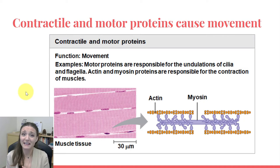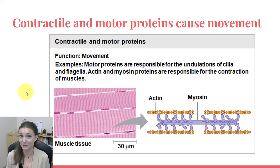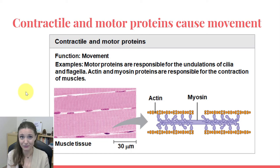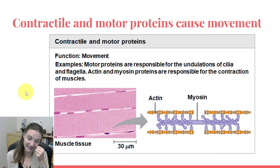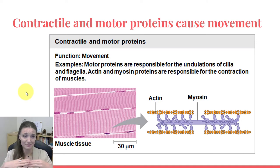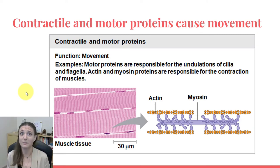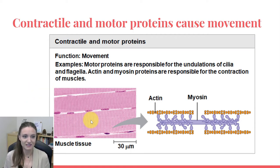Contractile motor proteins can cause movement. Most of our muscle tissue is made of proteins that move against each other to contract, which causes them to overall shorten, which causes us to move our skeleton. Actin and myosin are some of the most famous of these — they move against each other to shorten, and then extend back out when relaxed. That process takes a lot of ATP. The striations visible in muscle tissue are all these proteins, actin and myosin, working together to cause contraction.